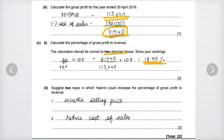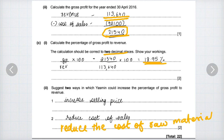Then suggest two ways in which Yasmin could increase the percentage of gross profit to revenue. She could increase the selling price, or she could reduce the cost of raw materials by buying cheaper raw materials, which would increase her gross profit.